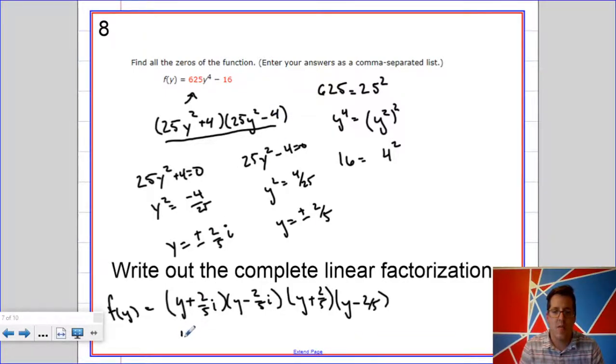So maybe a better approach to this would be to have continued factoring these. Factor them instead as 5y plus 2i and 5y minus 2i. Perhaps it'd make a little bit more sense to put those over here. So if I were to factor this again as a difference of squares, I'd get 5y plus 2i, 5y minus 2i, and the same thing here. So this is the actual answer we're looking for. This is equivalent to the right answer, multiplying by 625 in front, but I'm not sure if WebAssign will take that.